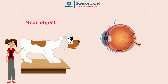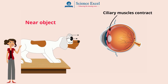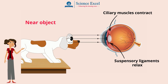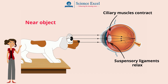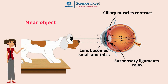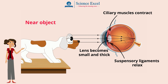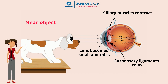For a near object, the ciliary muscles contract and the suspensory ligaments relax. This causes the lens to become small and thicker. Light rays are refracted more than they were when looking at the distant object. The near object is in focus.